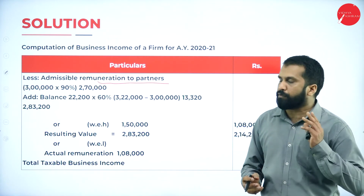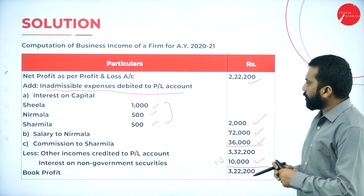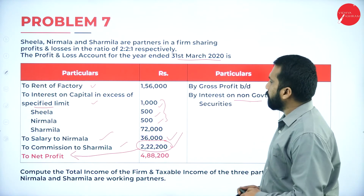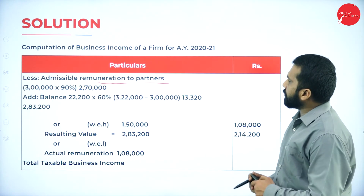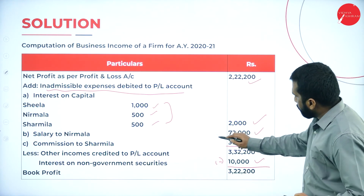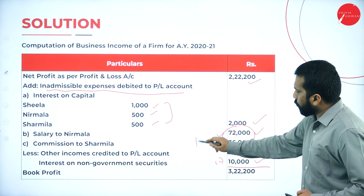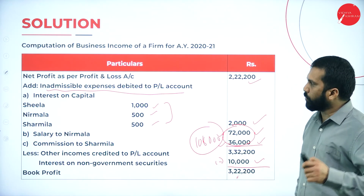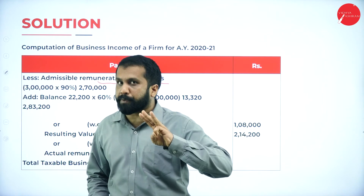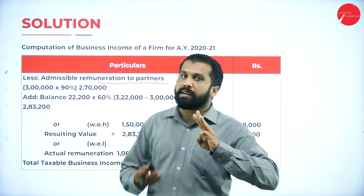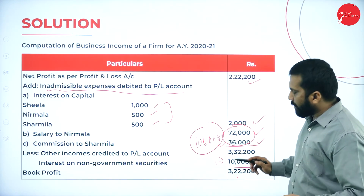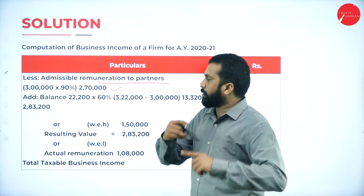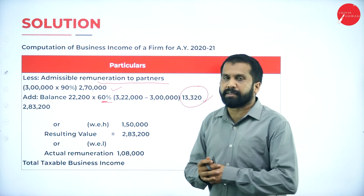The actual remuneration is already given in the question - salary and commission. Salary is 72,000 and commission is 36,000, so actual remuneration is 1,08,000. Book profit is 3,22,000. As per the calculation: up to 3,00,000 we consider 90%, and above 3,00,000 it is 60%. So up to 3,00,000 at 90% gives 2,70,000, and the extra 22,000 at 60% gives 13,200.